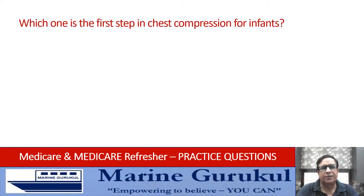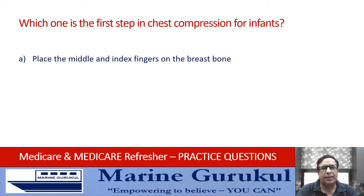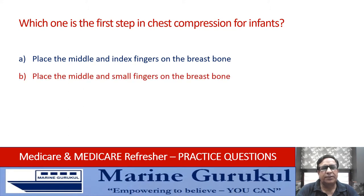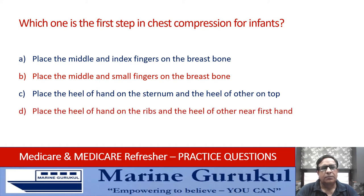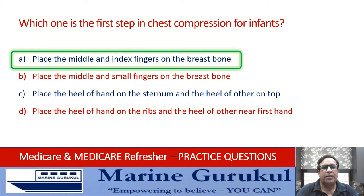Which one is the first step in chest compression for infants? Place the middle and index finger on the breast bone; place the middle finger and small fingers on the breast bone; place the heel of one hand on the sternum and the other on top; or place the heel of hand on ribs near the other hand? The answer is A — place the middle and index fingers on the breast bone.